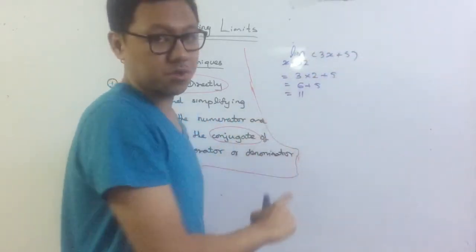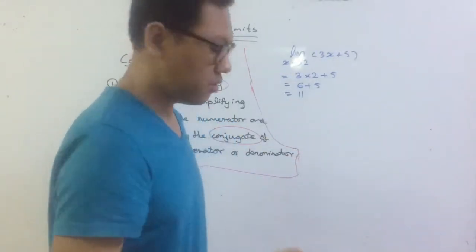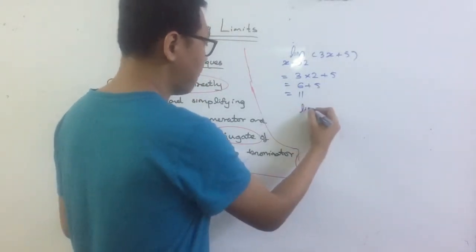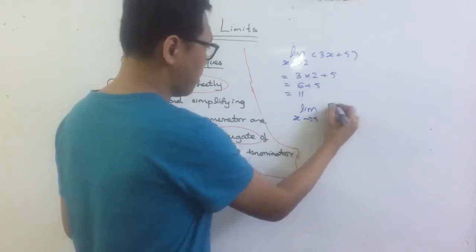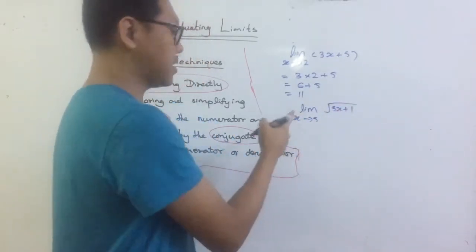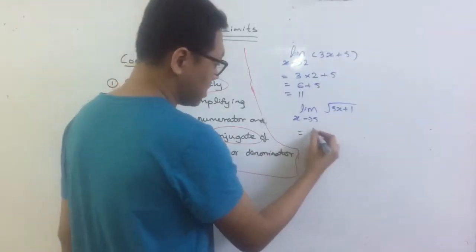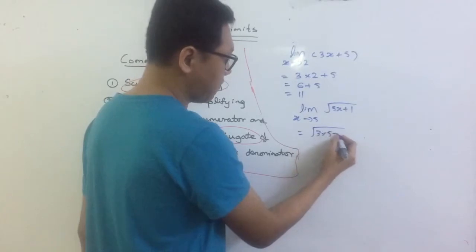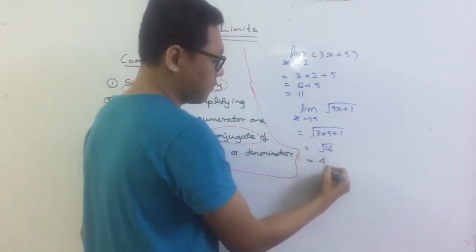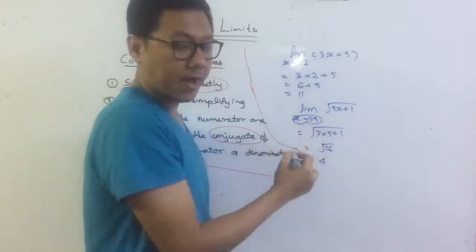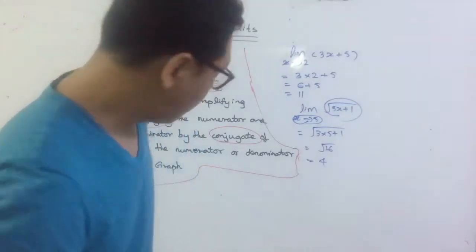When x approaches to 2, this whole expression approaches to 11. Let me show you another example: limit as x approaches to 5 of square root of 3x plus 1. This one is the same - substitute directly. Just substitute 5 here: 3 times 5 plus 1, which is 15 plus 1 equals 16, and square root of 16 equals 4. When x approaches to 5, this whole expression approaches to 4.